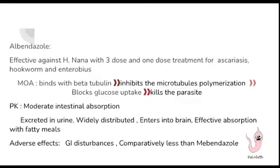The next benzimidazole drug is albendazole. It is effective against tapeworm with three doses, and a one-dose treatment is used for other worm infestations. Its mechanism of action is the same as mebendazole. However, in terms of pharmacokinetics, albendazole has moderate intestinal absorption compared to mebendazole's minimal absorption, making it more effective.